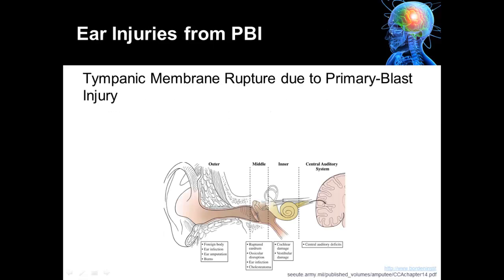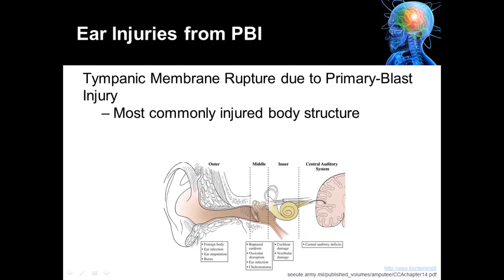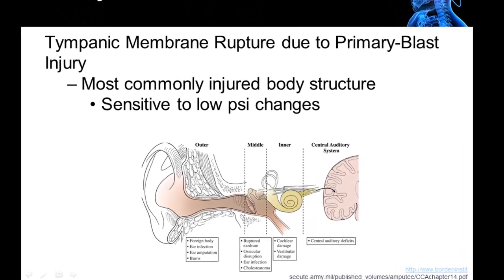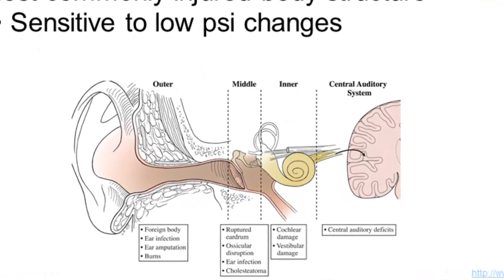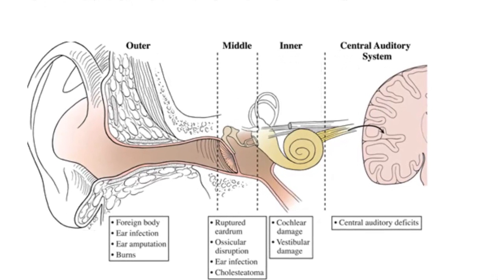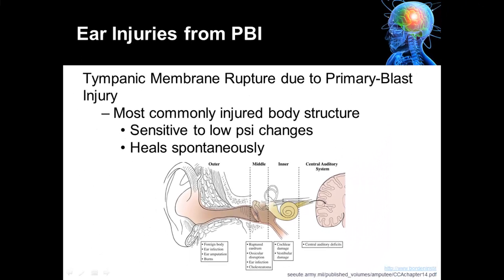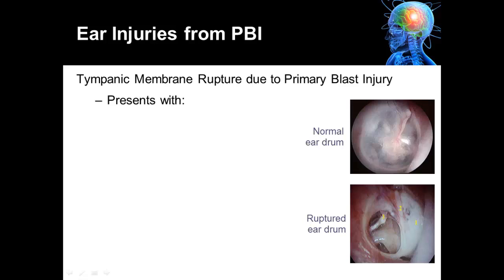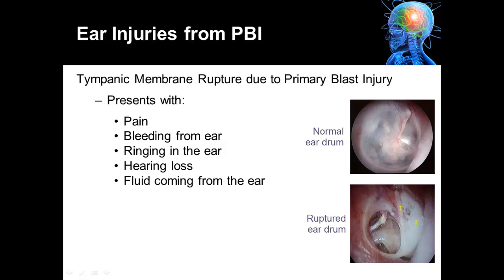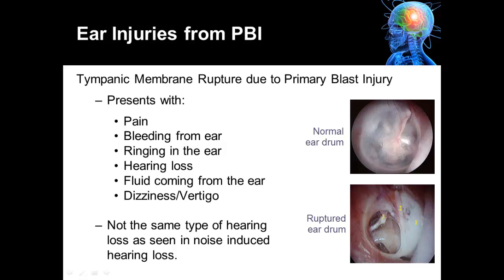The tympanic membrane can rupture due to primary blast injury. This is the most commonly injured body structure when exposed to a blast force. The eardrum exists between the outer and the middle ear and is very sensitive to low PSI changes. However, when it is injured it usually heals spontaneously. Injury to the tympanic membrane can present with pain in the ear, bleeding from the ear, ringing in the ear, hearing loss, fluid coming from the ear, or dizziness and vertigo.